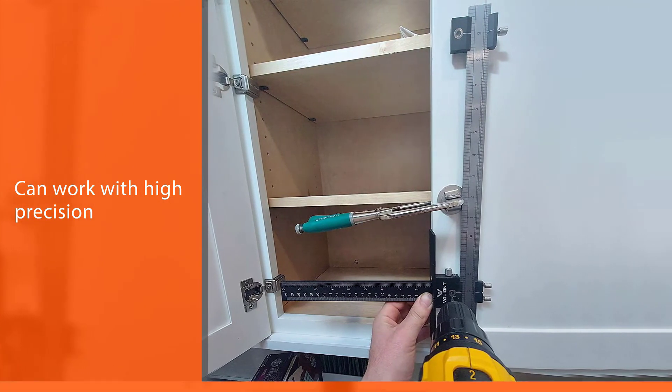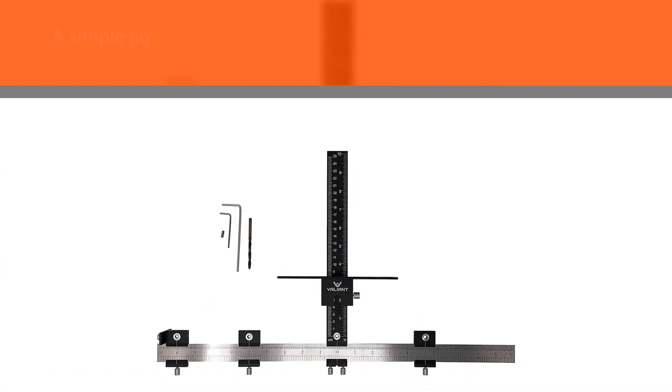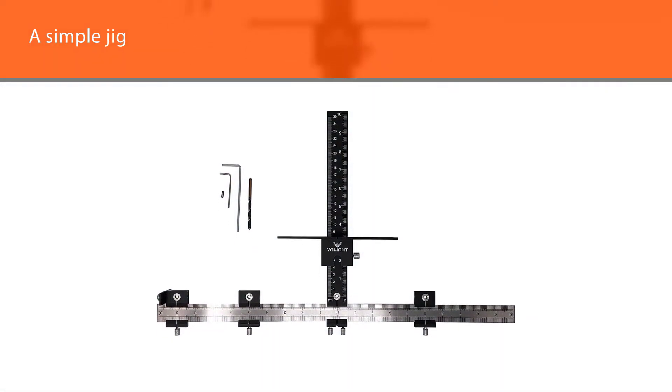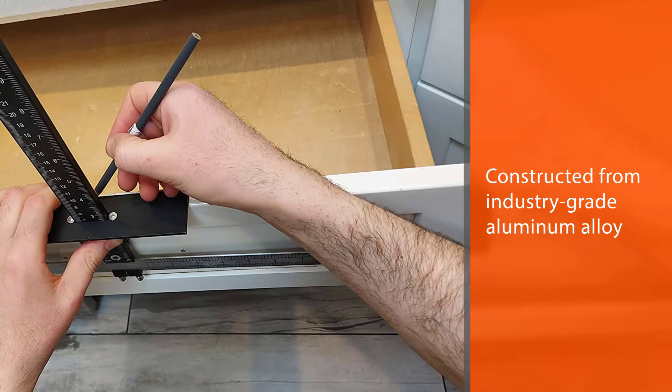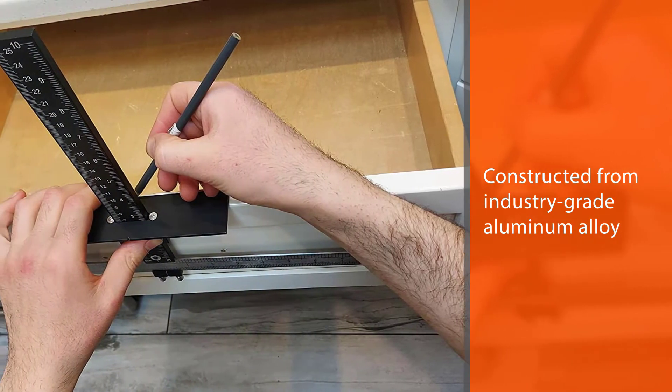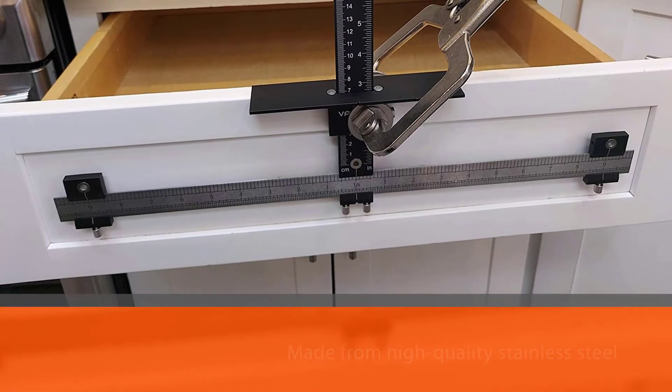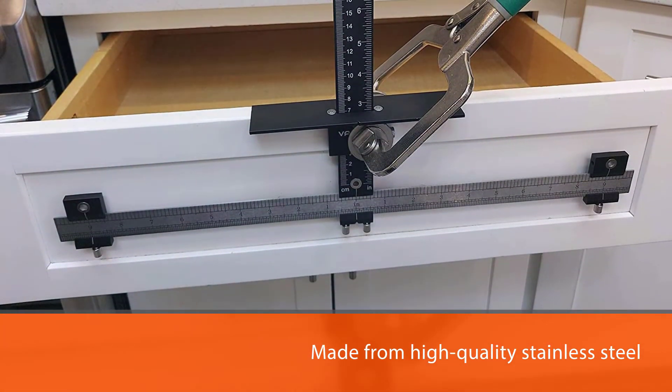It's a simple jig that makes the whole installation process a breeze. Constructed from industry-grade aluminum alloy, this tool will easily outlast your mounting needs. The most important part of this jig, which is the ruler, is made from high-quality stainless steel. This tool comes with a nice storage bag that you can use to keep all the attachments and parts like the allen wrench and drill bits.